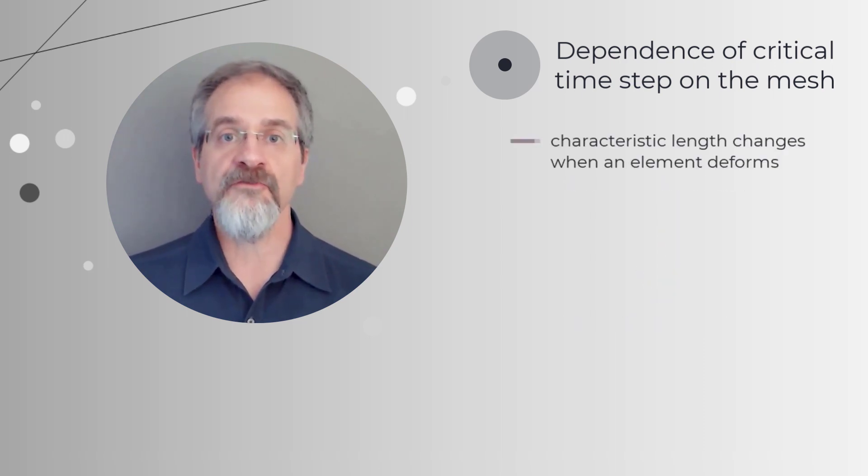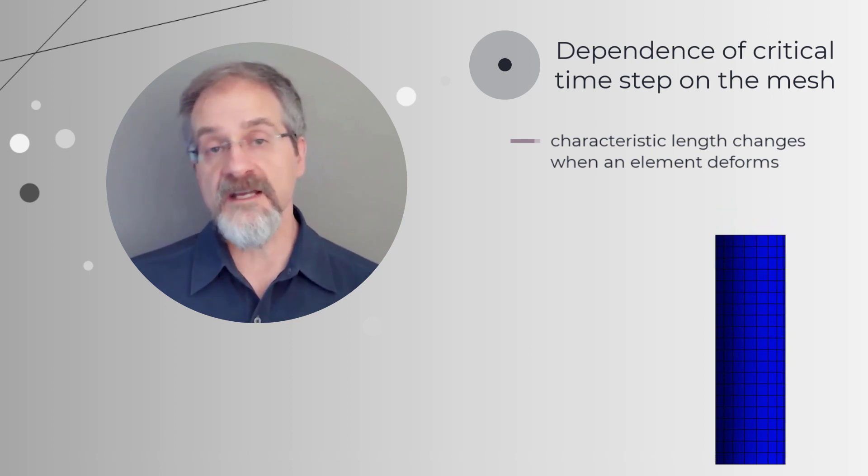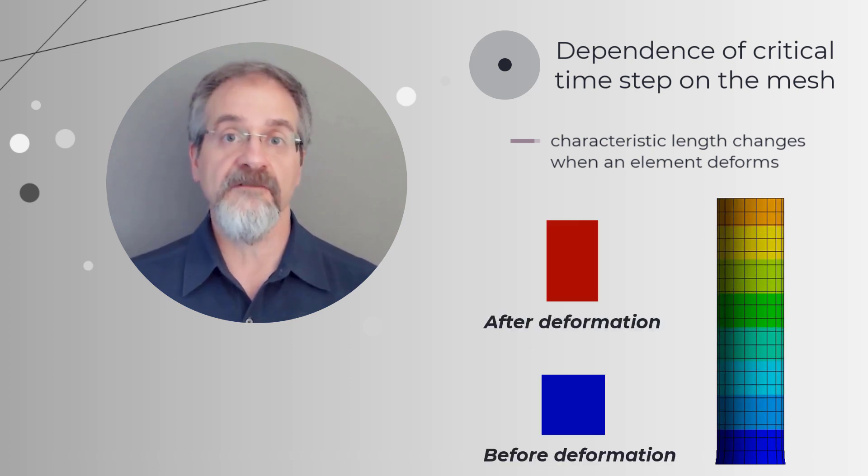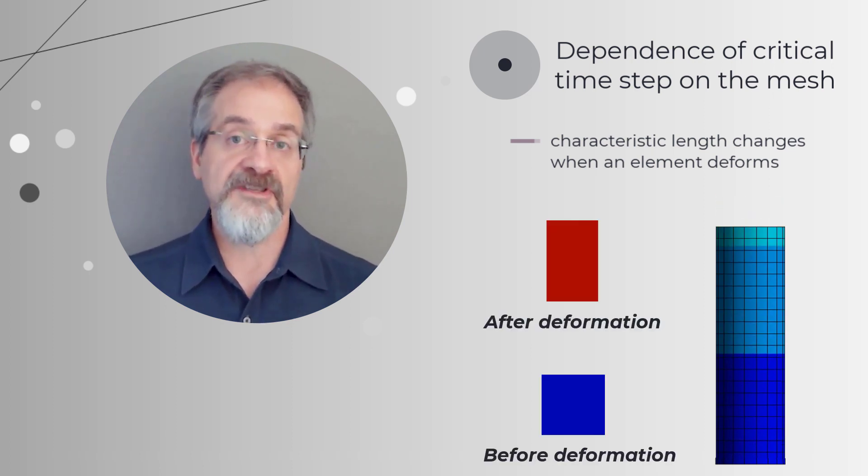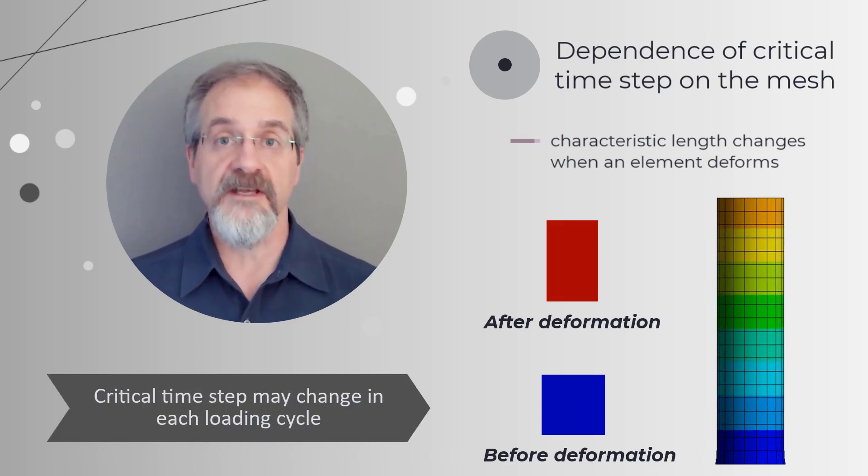It's important to note that characteristic length changes when an element deforms under applied loads. For example, under tensile or compressive loading, the element size will increase or decrease respectively. Hence, the characteristic length, and in turn the critical time step size, may change in each loading cycle.